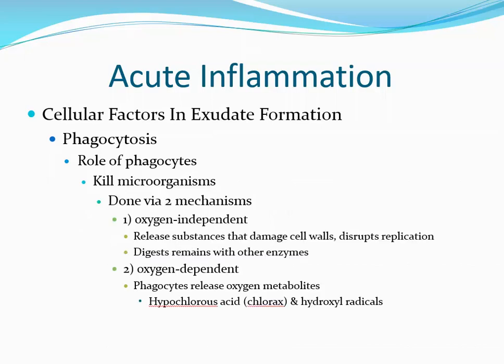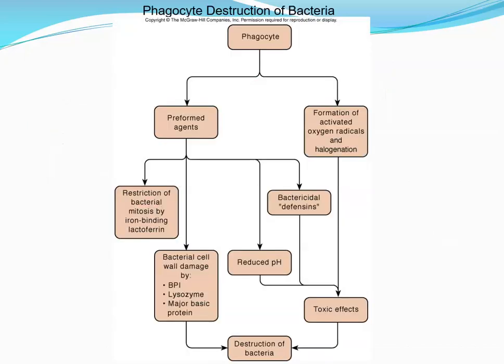When destroying microorganisms, killing is done via two mechanisms. One is oxygen-independent — substances are released that damage the cell walls of bacteria, disrupt their replication, and lower the pH; other enzymes then digest what remains. The other is oxygen-dependent — phagocytic cells release oxygen metabolites such as hypochlorous acid (commonly known as Clorox) and hydroxyl radicals, which kill and break down the bacteria.